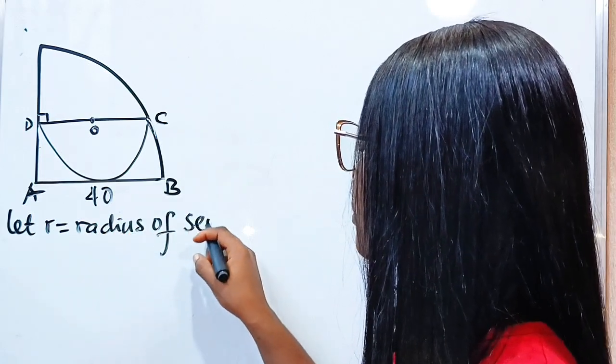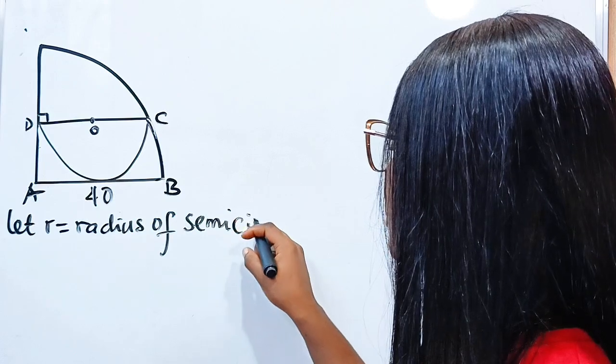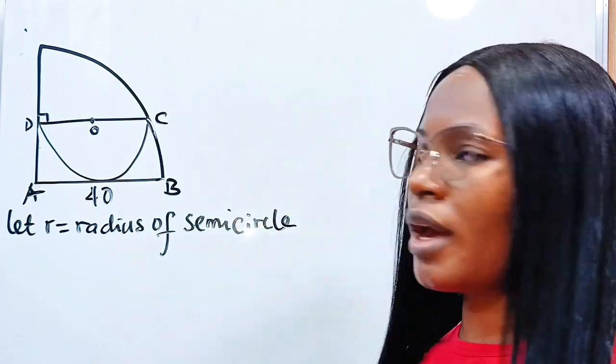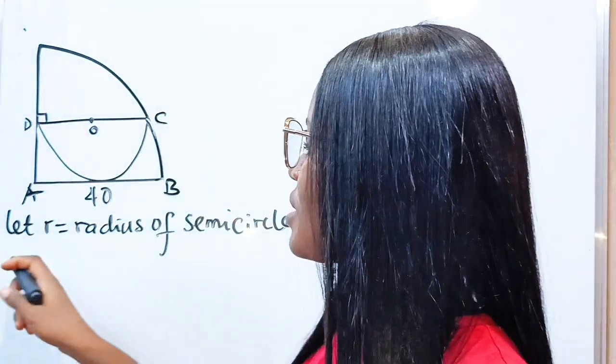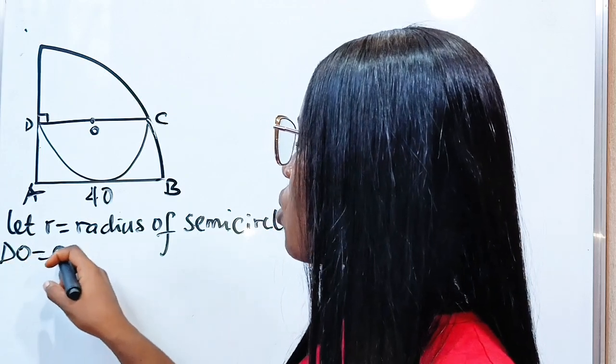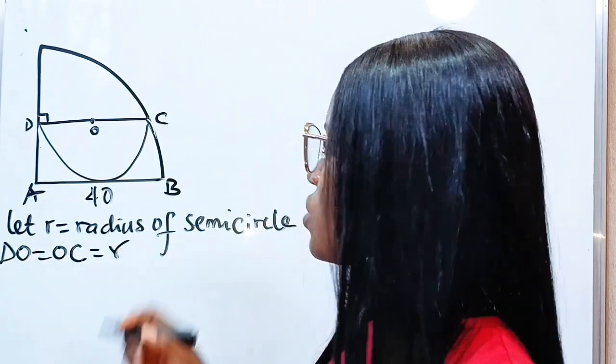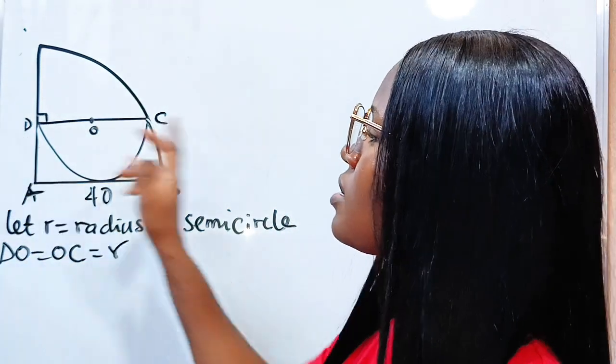So that means DO is equal to OC, which is equal to r, since DC is the diameter of the semicircle. So here is r and here is r.